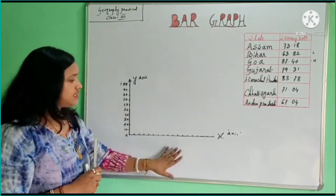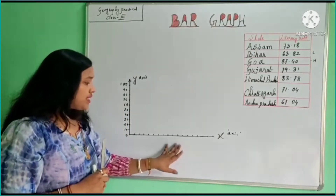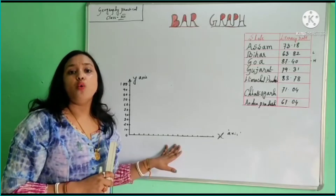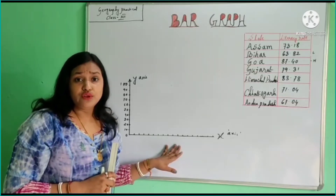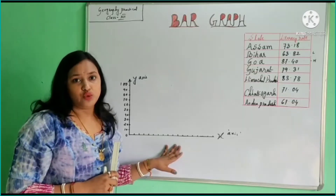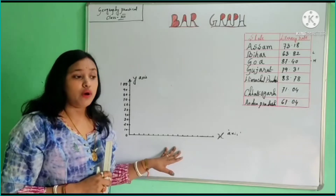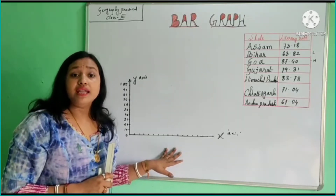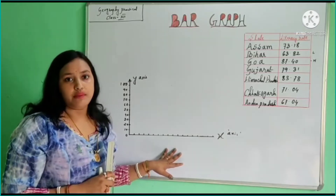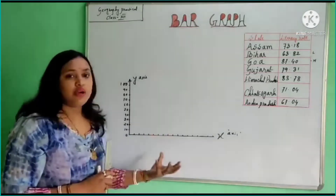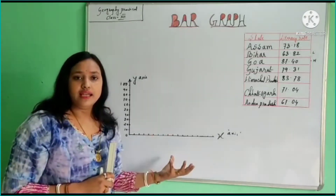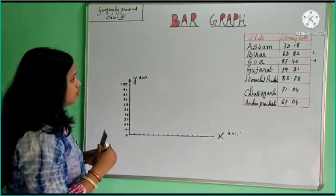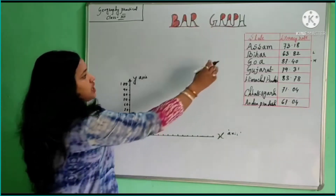Now we talk about our horizontal axis. On the horizontal axis, choose a uniform width of bar and uniform gap between the bars. What do we mean by uniform width and uniform gap? Let's start drawing and then you can understand very easily.